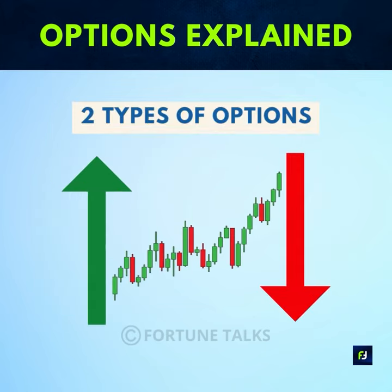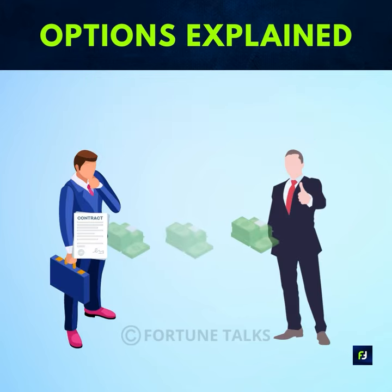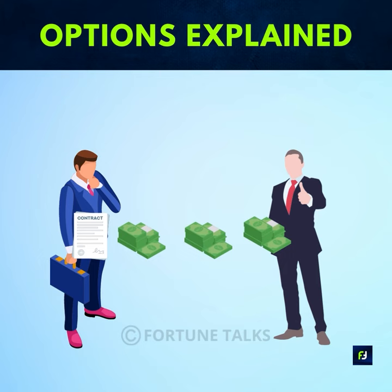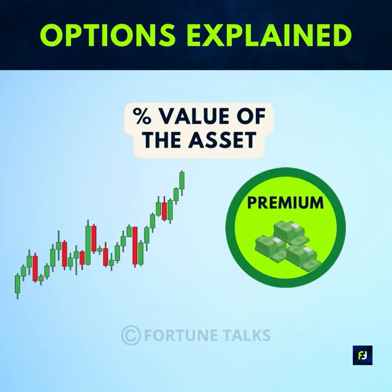There are two different kinds of options available: call and put options. The upfront fee the buyer pays for buying the option contract is called the premium, which is a percentage of the value of that asset.